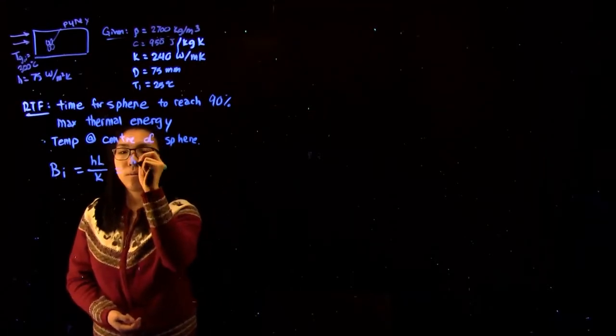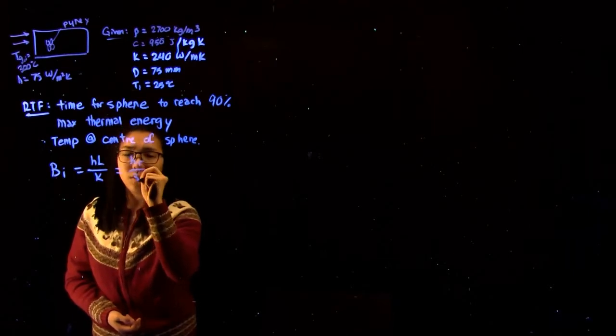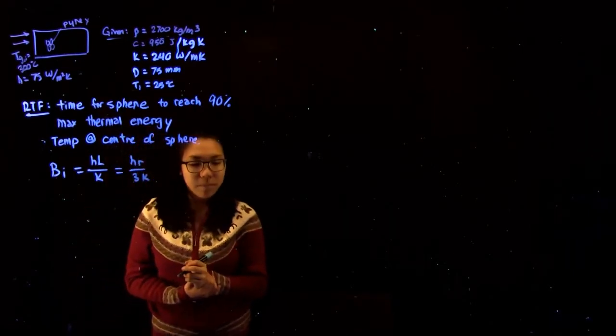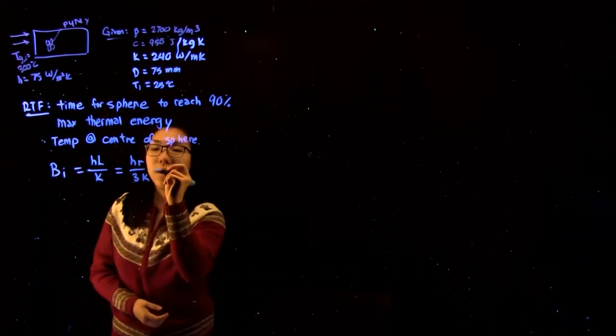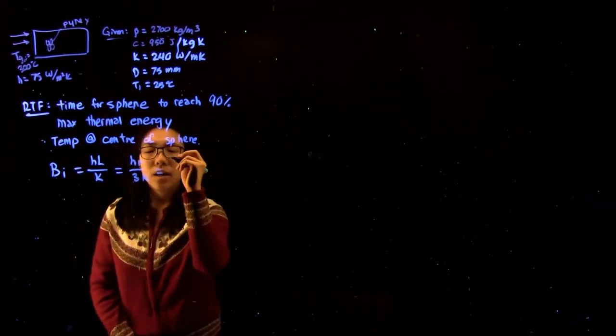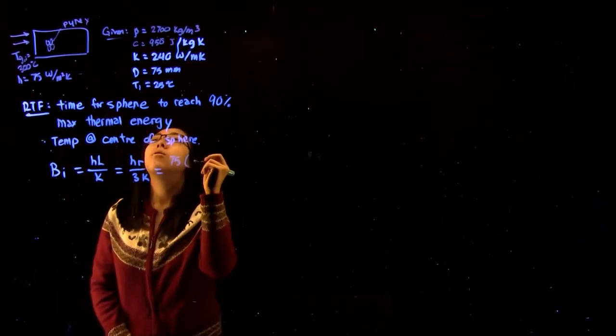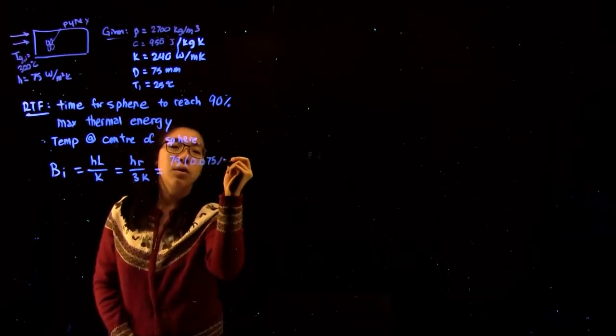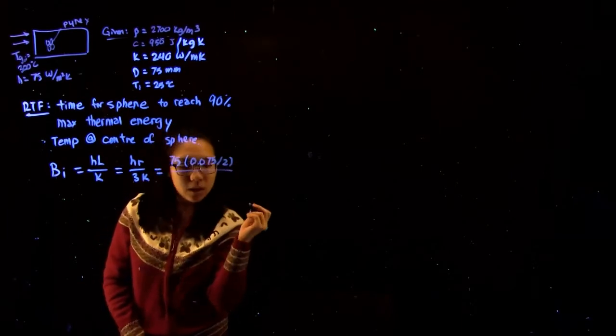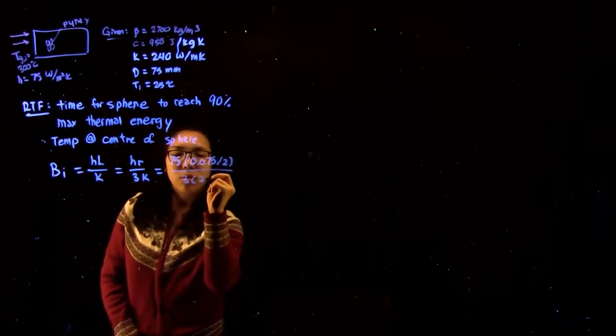In this case, we want to substitute HR over 3K for our Biot number. Substituting in the values, we have H times 75, R equals 0.075 over 2, as we're given the diameter, over 3 times 240.